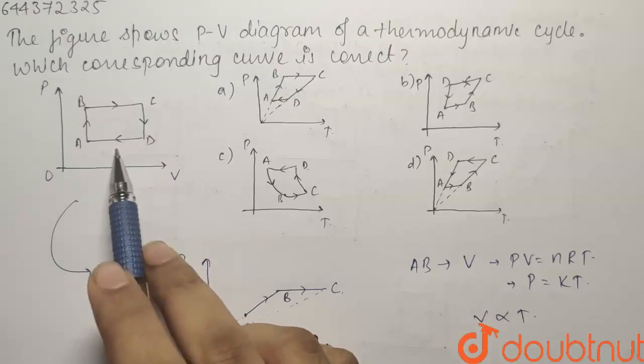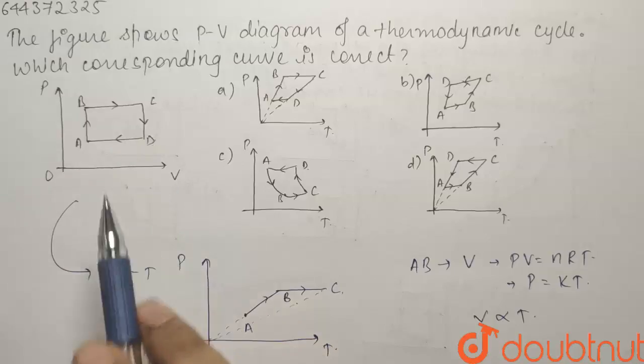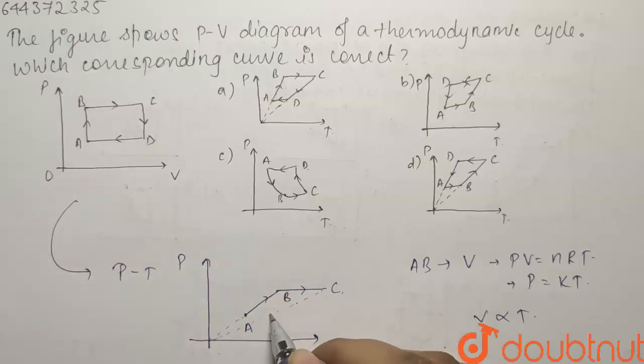And we know that AD is a constant pressure process. So the pressure of A and D is same. I will find the point D where the pressure is same on the line OC. So I get this point. Our curve looks something like this. This will be our curve.